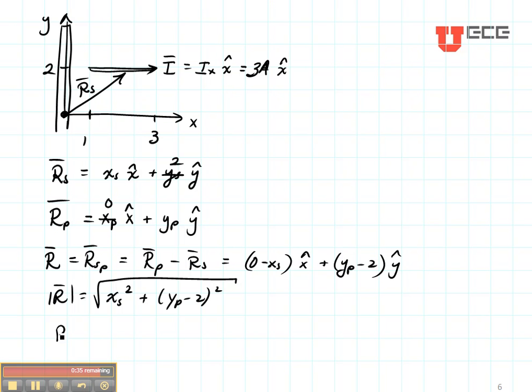The unit vector, or R hat, is found by taking R and dividing it by its magnitude. Which is going to give us minus XS in the X direction plus YP minus 2 in the Y direction divided by XS squared plus YP minus 2 squared square rooted.